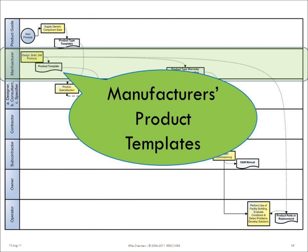The manufacturers that helped create these product type templates can fill out their specific products in these templates to produce manufacturer's product templates. For every model number — for everything you can buy — you have a separate template. There are templates for off-the-shelf products, templates for assembled products, and templates for engineered products. As of August 2011, we have 1,200 product type templates that include both individual products and assembled sets of products.